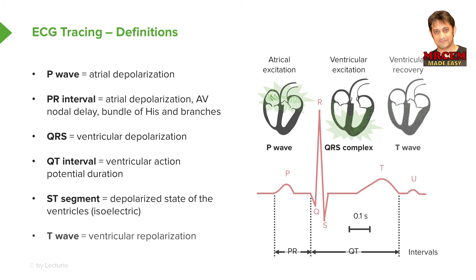The final thing we have is called the T wave, and the T wave is the repolarization of the ventricles. In certain pathologies, there's another little bump after the T wave called the U wave — but that only occurs in pathology.